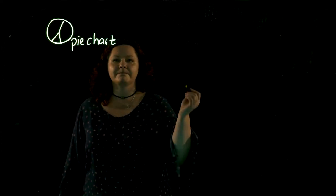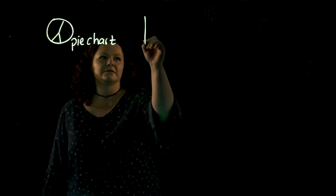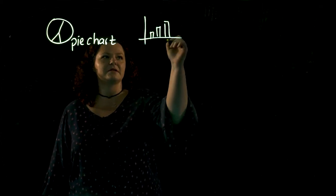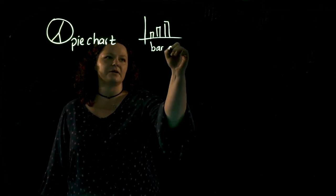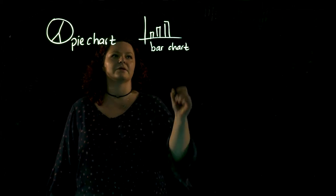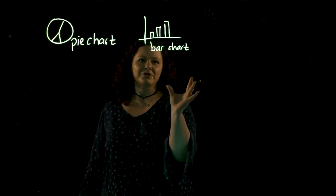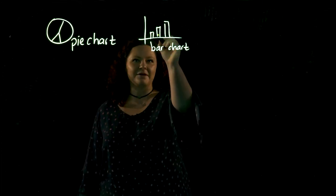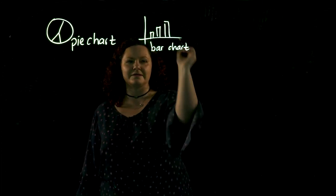The second graphical illustration is this. This is called a bar chart. We can use the bar chart for various things, also to show a trend, but also to compare values, for example, this and this value.